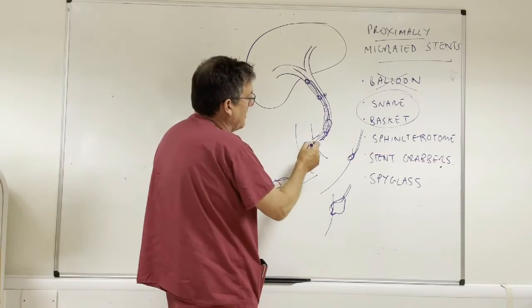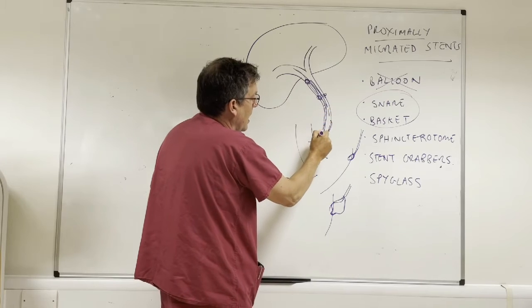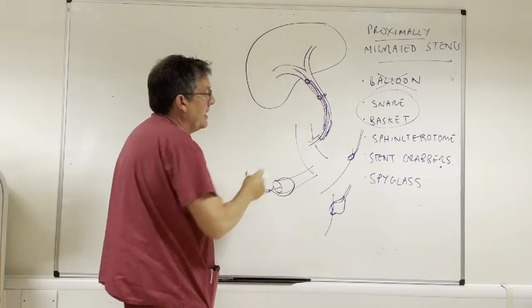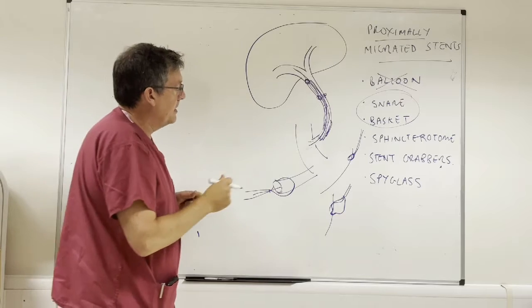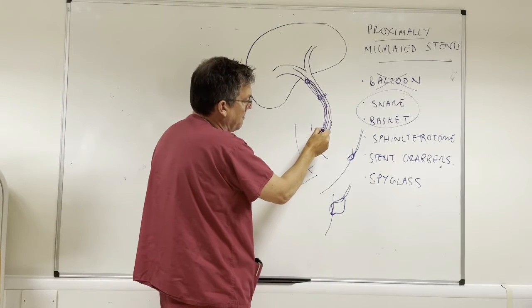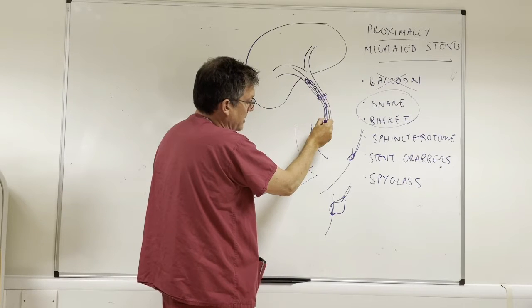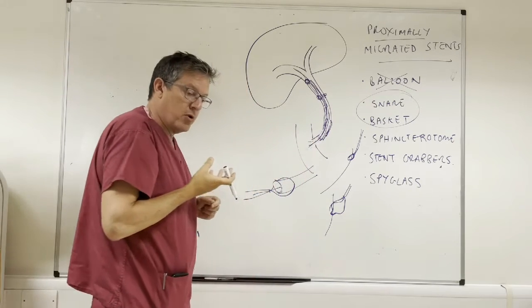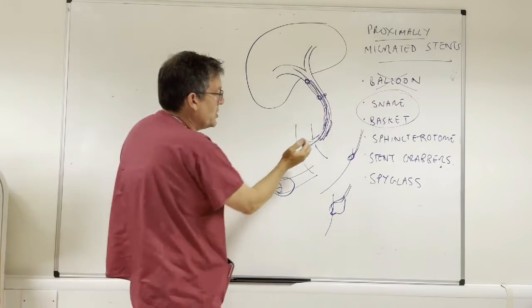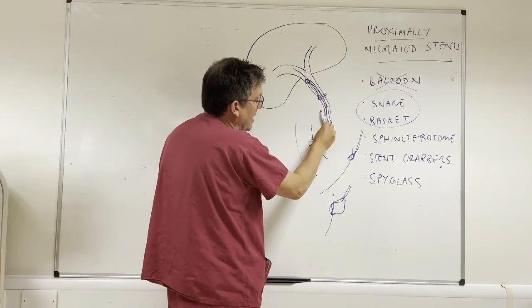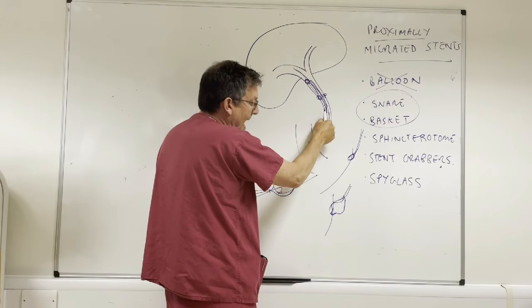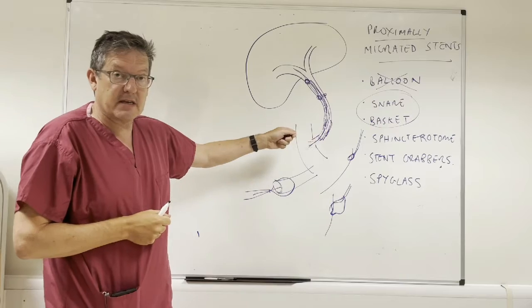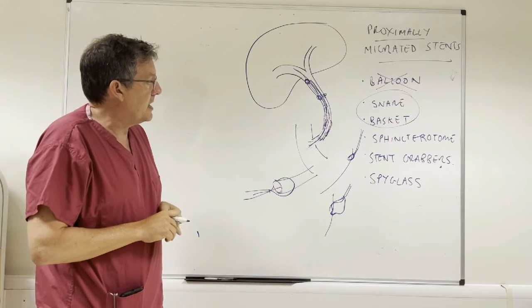Another variation on that is that if you have done your initial cannulation with a sphincterotome and a wire, you've managed by luck or design to get the wire inside the lumen of the stent, and then if you can carefully pass the sphincterotome into the lumen of the stent, one can then put a hard bend on the tip of the sphincterotome which allows it just to grab the internal lumen of the stent and then you can sometimes draw the sphincterotome out and it will catch the stent. So I think that's a technique that can be worth trying.